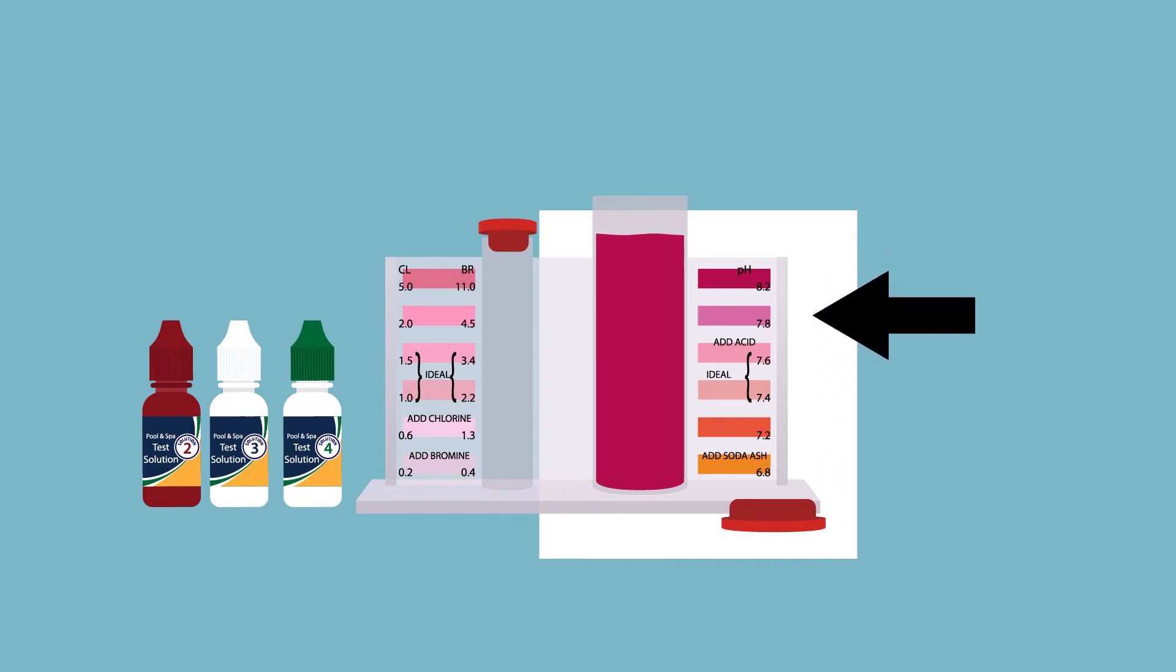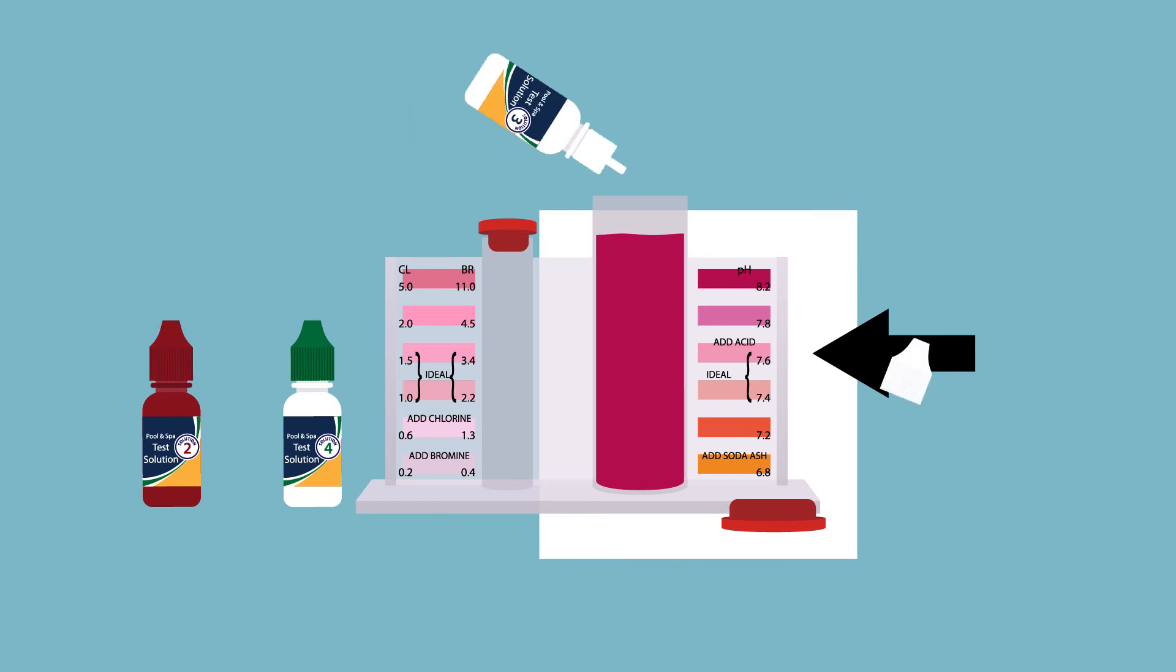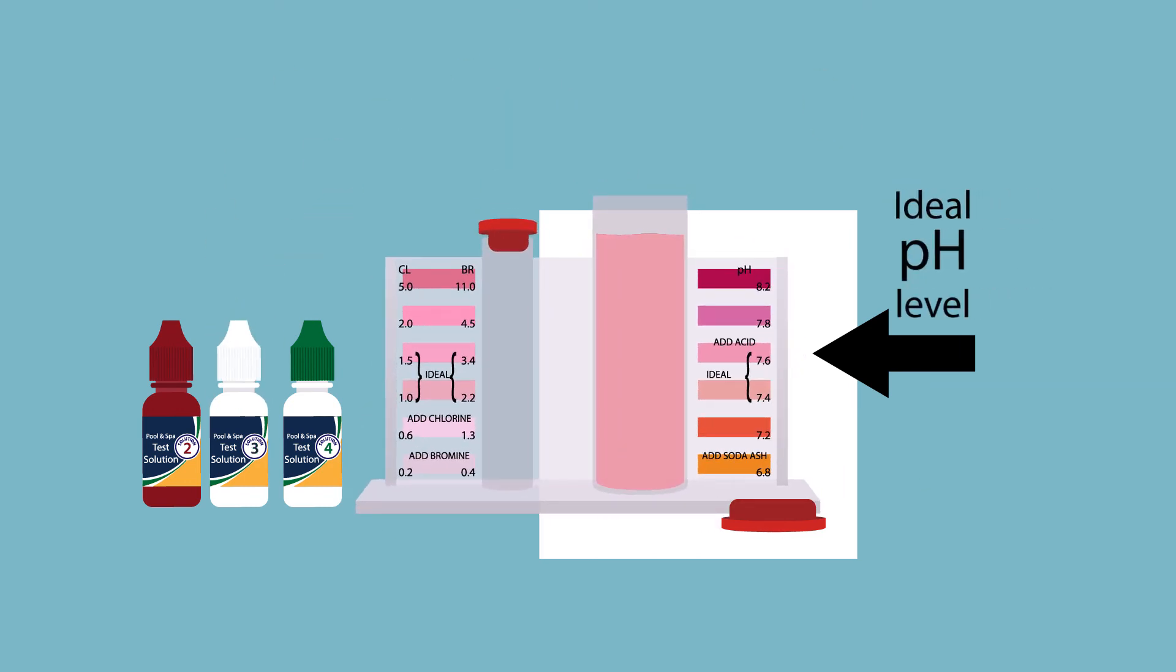If the pH level exceeds 7.6, simply add one drop at a time of solution number 3 to the existing test water, swirling each time. Count each drop until the water changes colour to the ideal pH level as indicated. The number of drops indicates how much acid is required based on the size of your pool.